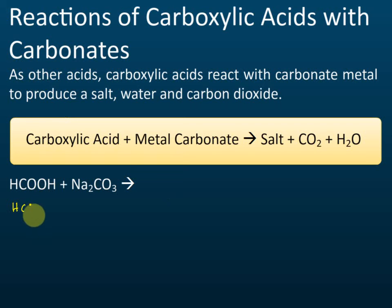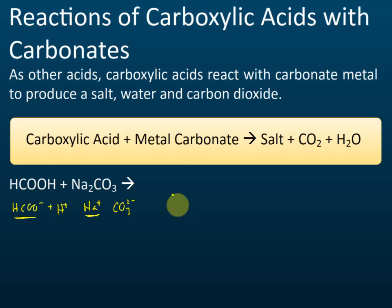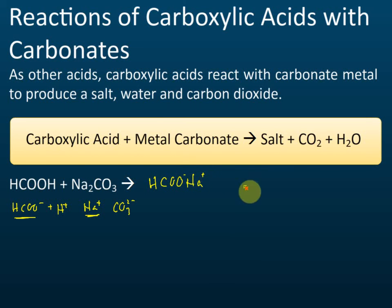Methanoic acid dissociates into HCOO⁻ (methanoate ions) and hydrogen ions. Sodium carbonate gives sodium ions and carbonate ions. Sodium combines with the methanoate ion. Since sodium is positive and methanoate is negative, they attract each other, so the formula of the salt is HCOONa — sodium methanoate.